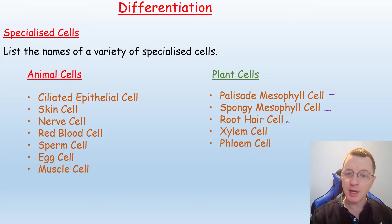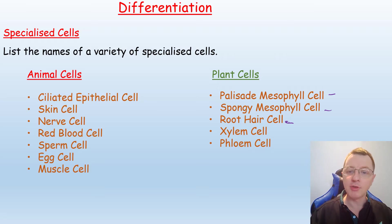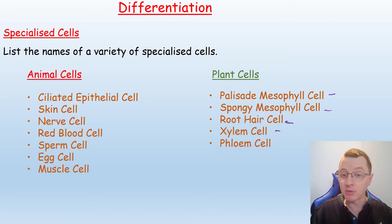We've got the root hair cell, which has the function of absorbing water and minerals from the soil, and the xylem cell, which will transport that water and minerals up towards the leaves for use in photosynthesis.